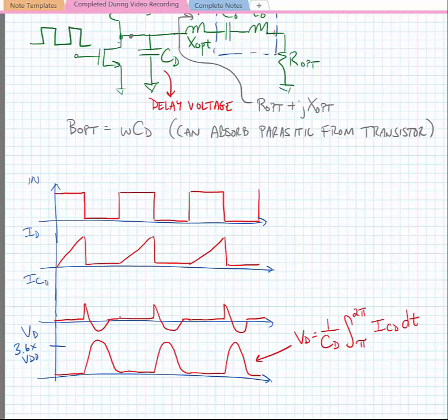And one thing to note is that in an ideal class E power amplifier, it can have a value as high as 3.6 times VDD due to the pulse shaping. And this was problematic for class E transistors using MOS devices. We will note here that we can cascode the MOS device in order to help protect it from this large voltage swing.